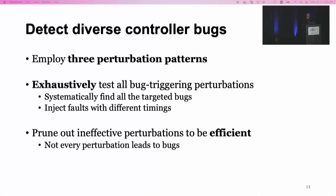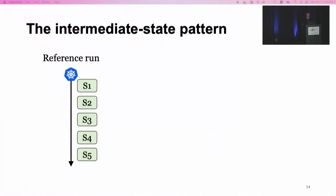SIEVE aims to detect diverse controller bugs instead of focusing on one type. To do so, SIEVE employs three different perturbation patterns that inject different faults. To systematically find all targeted bugs, SIEVE exhaustively tests all the bug-triggering perturbations by injecting faults with different timings. And to be efficient, SIEVE prunes out ineffective perturbations because not every perturbation can lead to a bug. Let me now introduce the three perturbation patterns.